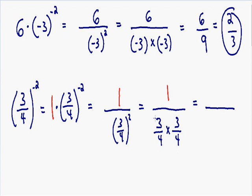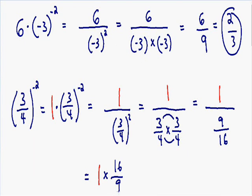Simplifying the denominator: 3 times 3 is 9, and 4 times 4 is 16, giving us 9 over 16 in the denominator with 1 in the numerator. Now we're dividing 1 by a fraction. Dividing by a fraction is the same as multiplying by the reciprocal, so 1 divided by 9 over 16 is the same as 1 multiplied by 16 over 9. So our final answer is 16 over 9. I hope this gave you a better idea about negative exponents and fractions.